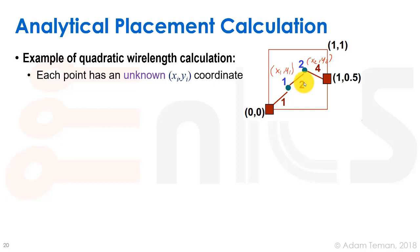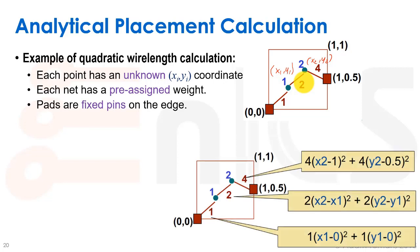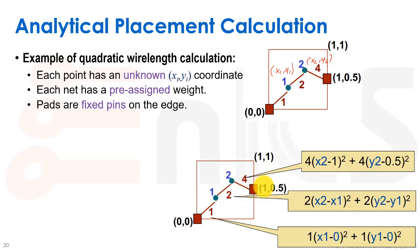To calculate the gate coordinates, we use the quadratic wire length. For the net between gate 1 and gate 2: (x2 - x1)² × 2 + (y2 - y1)² × 2. We must also include nets connected to pads, which have constant positions. For the net to the pad at (1, 0.5): (x2 - 1)² × 4 + (y2 - 0.5)² × 4. For the net to the pad at (0, 0): x1² × 1 + y1² × 1.